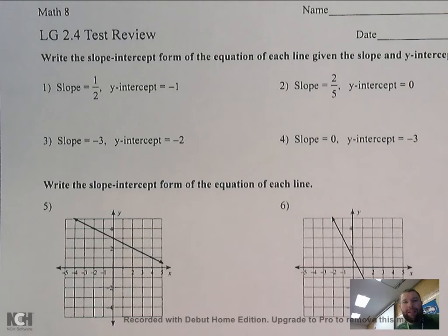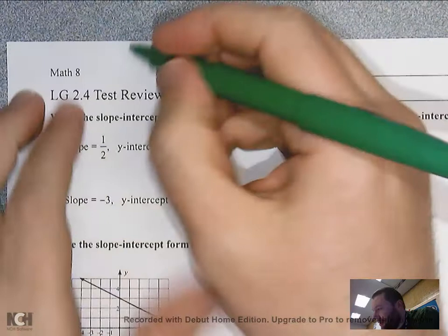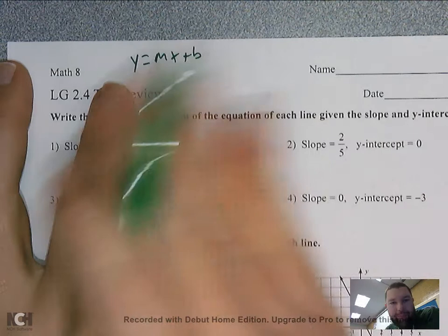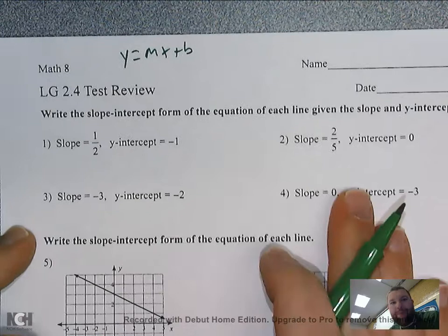For this video we need to remember that a linear equation looks like this: y equals mx plus b. To write the linear equation we need two things — y and x will always be there; those represent the y and x coordinates on the graph. Remember there's a y-axis and an x-axis. For m and b, we need numbers.